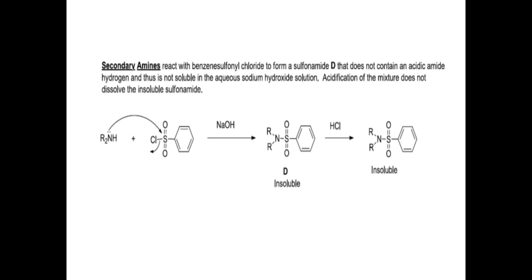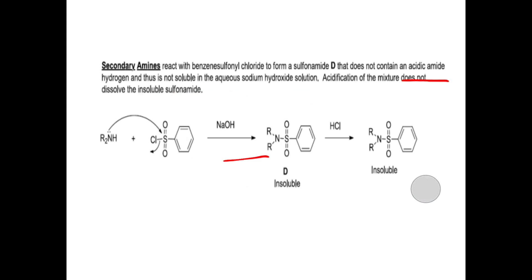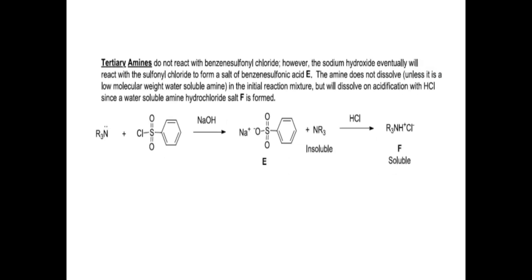Secondary amine reacts with benzene sulfonyl chloride in the presence of NaOH to give a sulfonamide (D). This sulfonamide does not contain acidic amide hydrogen and is not soluble in sodium hydroxide solution. Acidification of the mixture does not dissolve the insoluble sulfonamide.